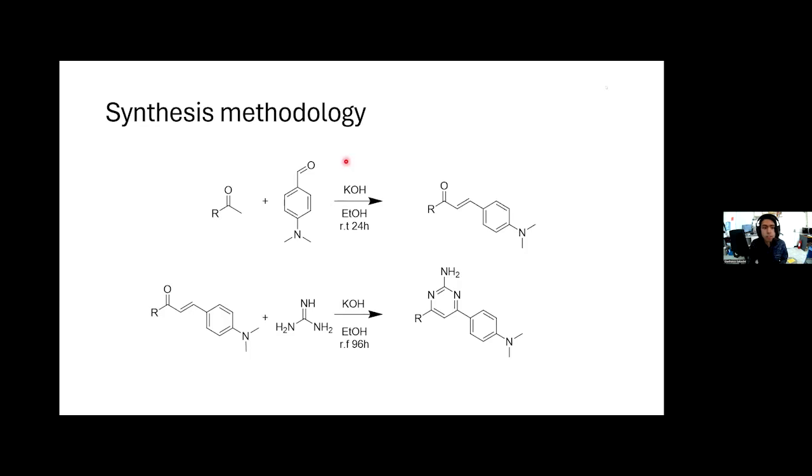For the synthesis methodology, it's only two steps. The first one is a Claisen-Schmidt condensation, where an acetone enolate in basic medium attacks the aldehyde to create a beta-ketone unsaturated, or chalcone. Then this chalcone can react by a cyclocondensation reaction with guanidine. In basic medium, ethanol, and reflux temperatures for 96 hours, we can obtain our aminopyrimidine structure.